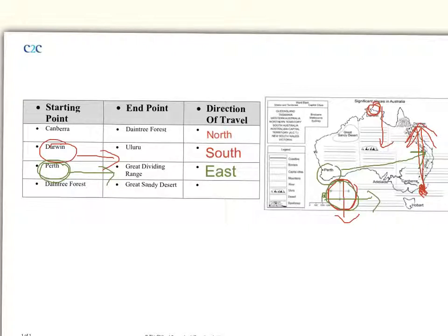There we have it. Now for the last one. We're going to go from the Daintree Forest. And do you remember where the Daintree Forest is? That was at the top of Queensland over here. Daintree Forest. And we're going to head to the Great Sandy Desert. The Great Sandy Desert is in Western Australia over here. From the Daintree across Australia to the Great Sandy Desert. What direction will we be traveling in when we go back across Australia? Not from Perth to the Dividing Range. That was east. We're going back the other way now. So following your compass, we're going from east to... What's the W stand for? West. That's right. And there you have it. We'll be traveling west.